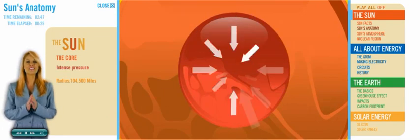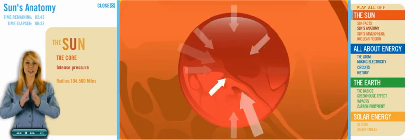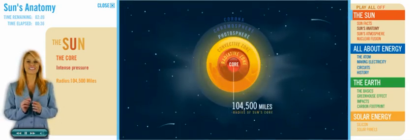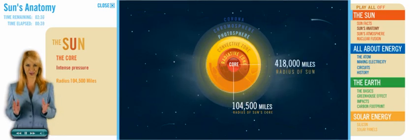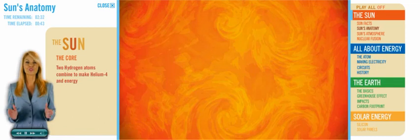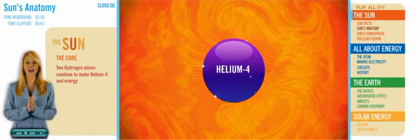Deep in the middle of the Sun, there is intense pressure, as gravity pulls all the mass of the Sun inward to the core. When measured from the very center, the Sun's core extends out one quarter of the Sun's total radius. The pressure in here is strong enough to force two atoms of hydrogen to come together to create helium-4 and energy.